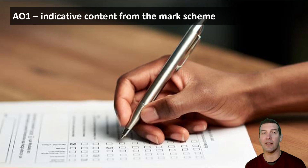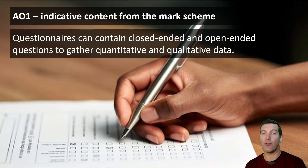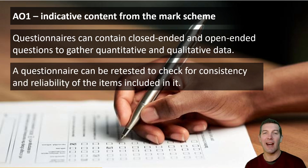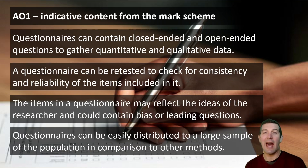The mark scheme has what's called indicative content — you don't need to mention any of these points to get full marks, but they are an indicator of the sort of thing you could write. There are four points: one is about closed and open-ended questions and linking that to quantitative or numerical and qualitative or word-based data; then the idea of retesting to check reliability; the idea that there could be bias or leading questions in questionnaires; and the idea that you can give them to lots of people and get a large sample. That's all AO1 knowledge.